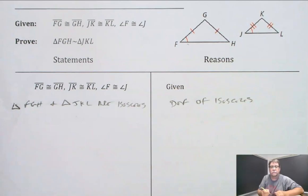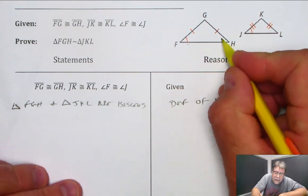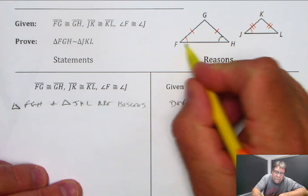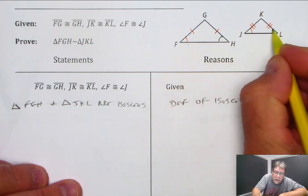So I'll leave it at that. I also can say that angle F and angle H are congruent, and angle J and angle L are congruent.